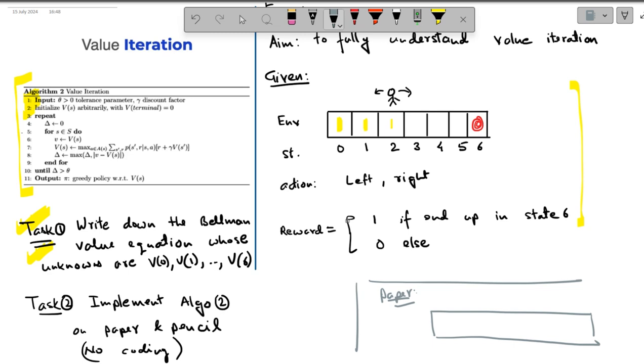On a piece of paper, start with a grid like this, a grid with the same size, 0, 1, 2, 3, 4, 5, 6. And I want you to start doing, on that piece of paper, the lines suggested by each line. So input with the first line says, input theta greater than 0 as the tolerance parameter and gamma as the discount factor. So on a piece of paper, you write down your theta is 0.01 and your gamma, let's say is 0.9.